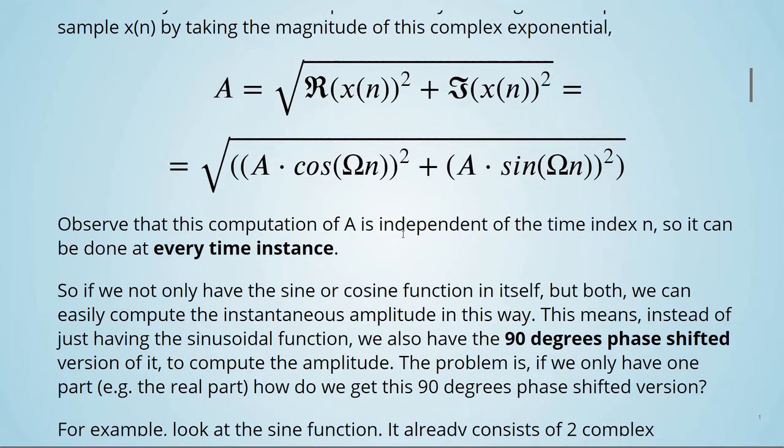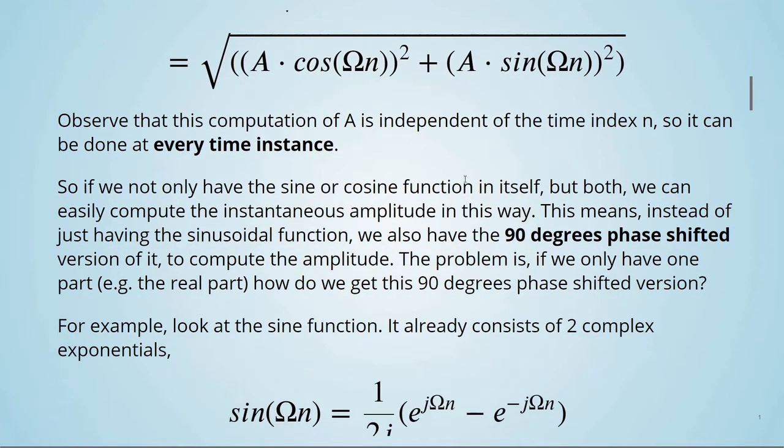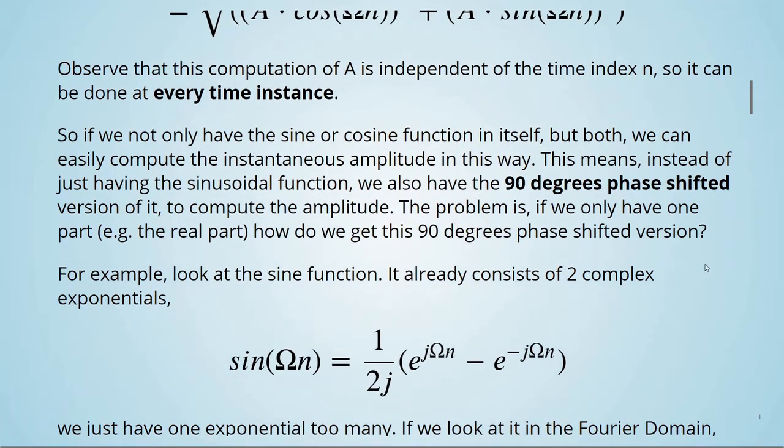So, if we not only have the sine or cosine function in itself, but both, we can easily compute the instantaneous amplitude in this way. This means, instead of just having the sinusoidal function, we also have the 90 degrees phase shifted version of it to compute the amplitude. The problem is, if we only have one part, the real part, how do we get this 90 degrees phase shifted version?